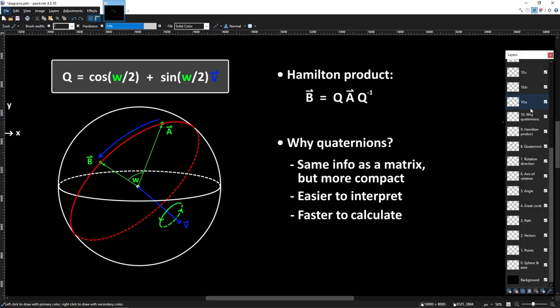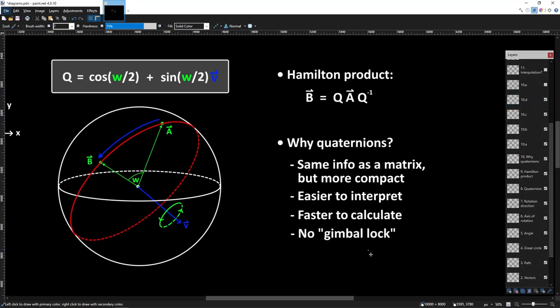Another huge reason for using quaternions over matrices is that quaternions are immune to something called gimbal lock. I won't explain gimbal lock here, but if you'd like to learn about it, there's a link in the description to an excellent video by GuerrillaCG who shows it using animations. And finally, one of the biggest reasons for using quaternions for rotations instead of matrices is that it's extremely easy to smoothly transition from one quaternion to another, also known as interpolation.